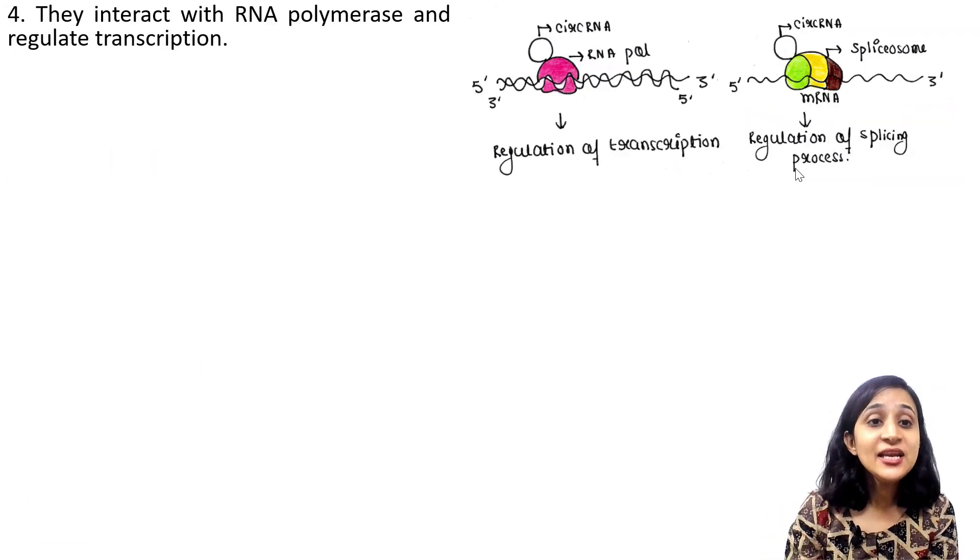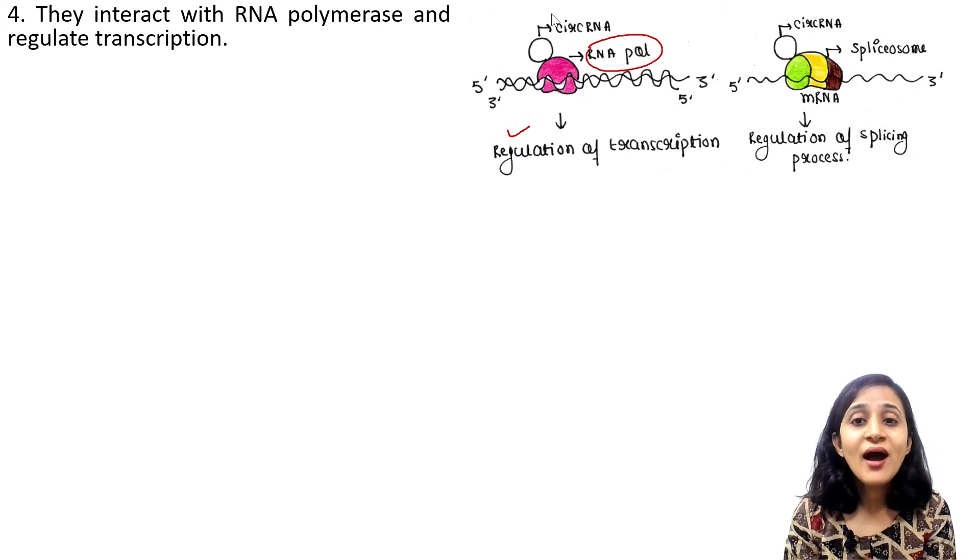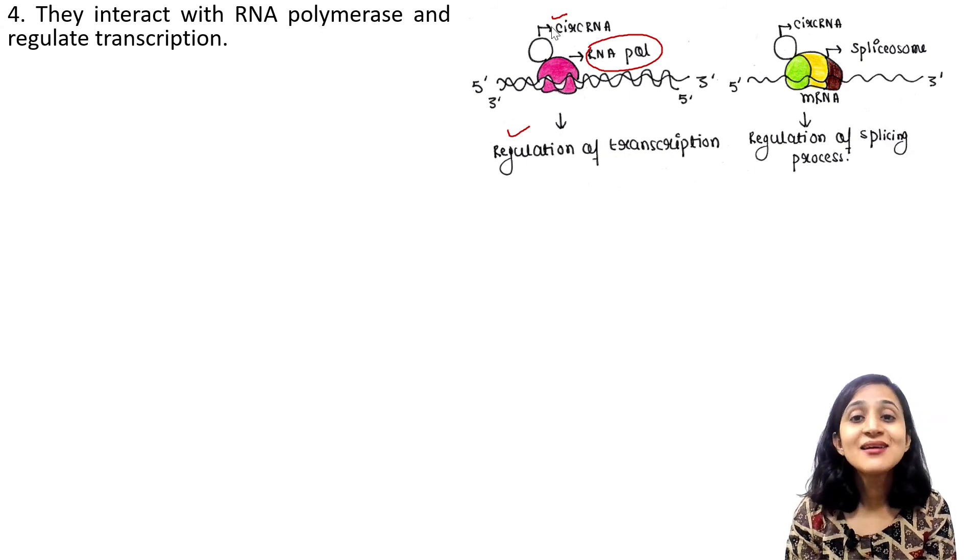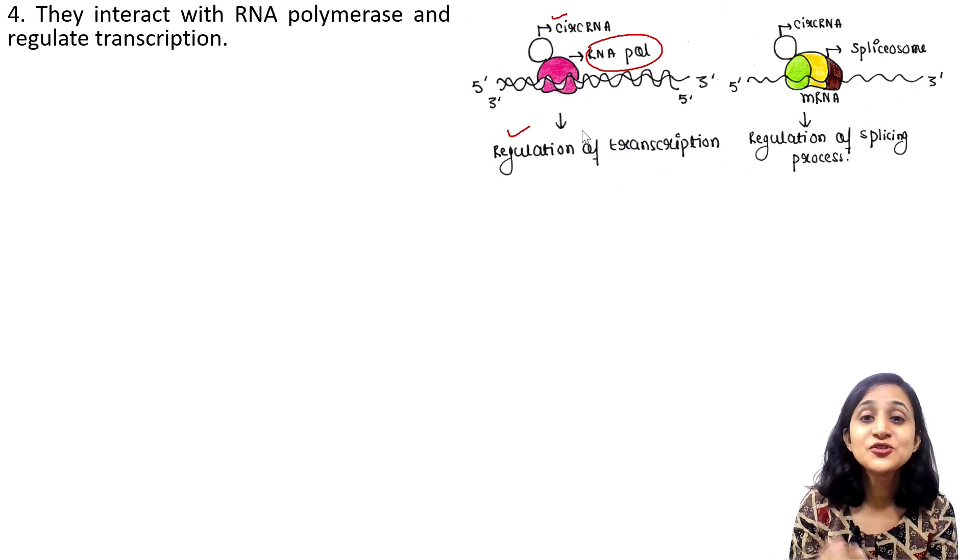They interact with RNA polymerase and regulate transcription. So we can see here that the RNA polymerase is binding here, and this circular RNA is binding this RNA polymerase. So this RNA polymerase is binding the DNA to undergo transcription, and the circular RNA is binding this RNA polymerase and regulating the transcription process.